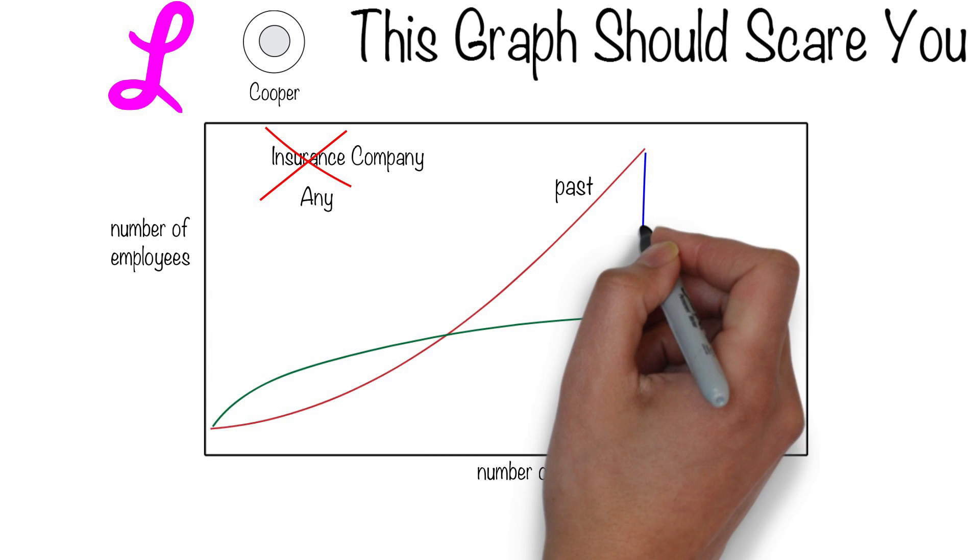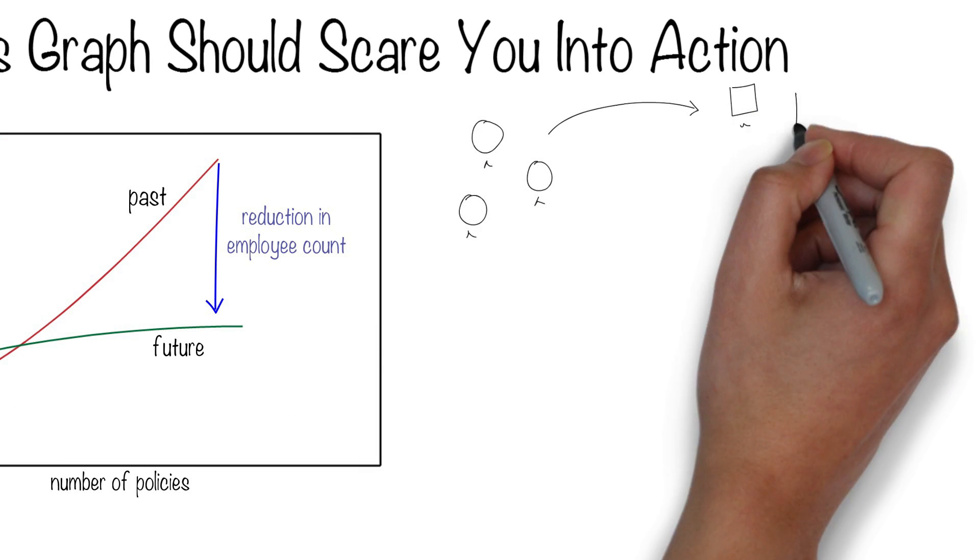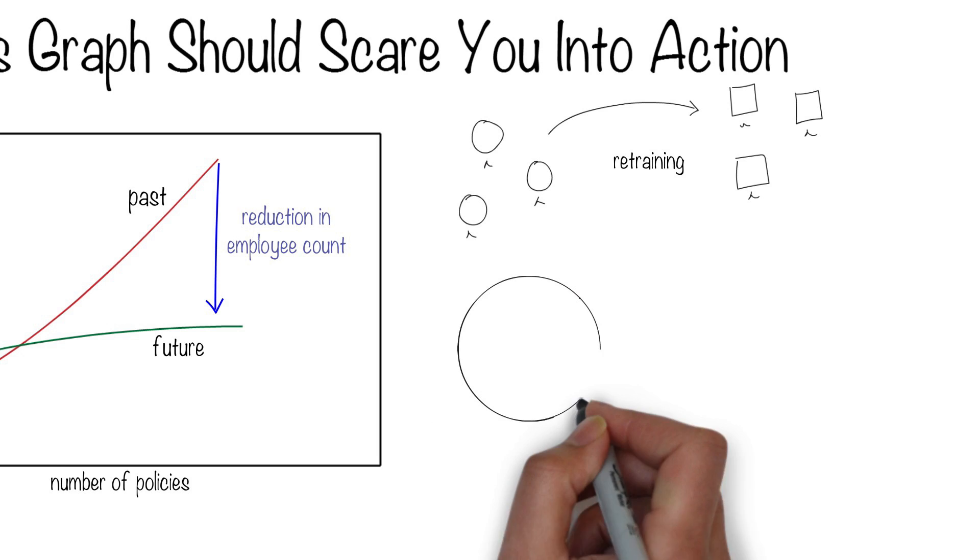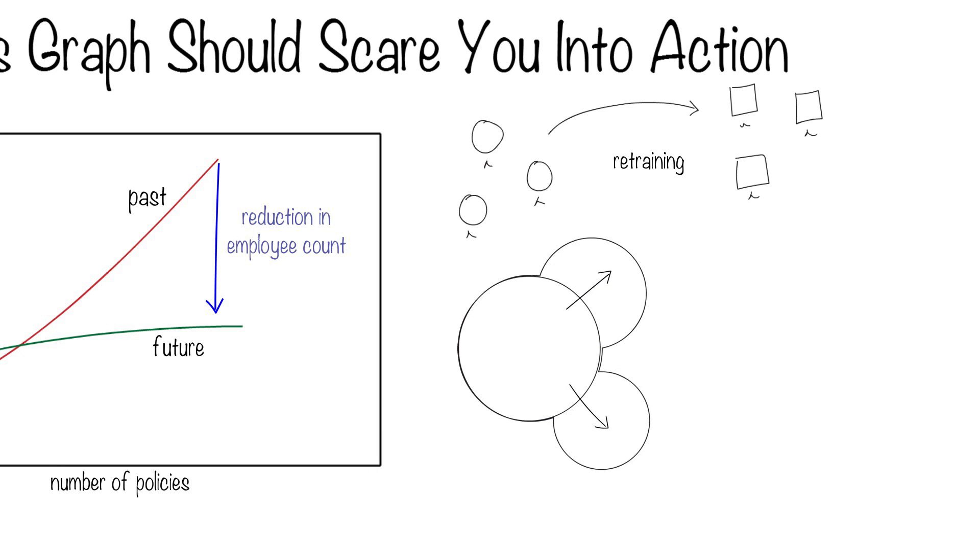If fewer people can do the work, then why hire more? If fewer people can do more, then why not reduce employee count? Retraining people is difficult. Expanding to new businesses so employees don't have to be let go is near impossible.